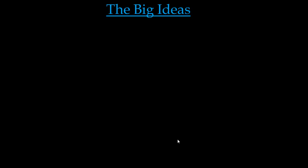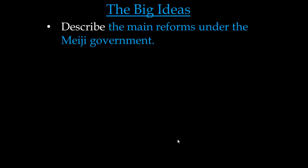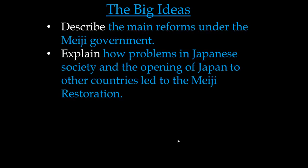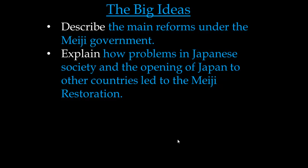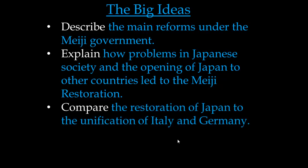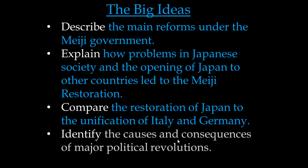Today we're going to be looking at the Meiji Restoration of Japan. The big ideas are: first, describe the main reforms under the Meiji government; second, explain how problems in Japanese society and the opening of Japan to other countries led to the Meiji Restoration; third, compare the restoration of Japan to the unification of Italy and Germany; and finally, identify the causes and consequences of major political revolutions.